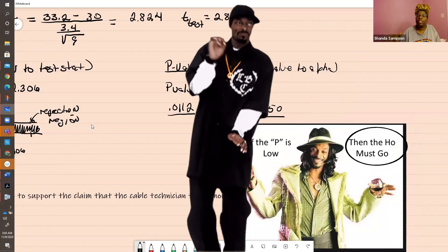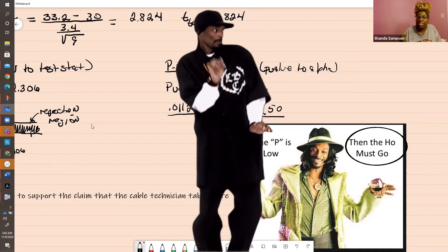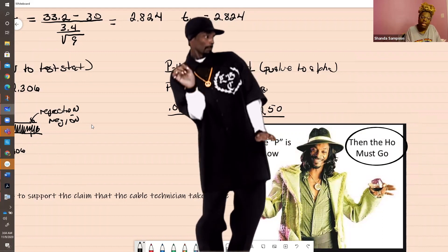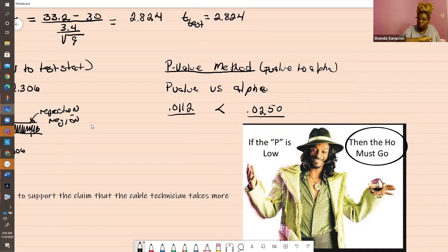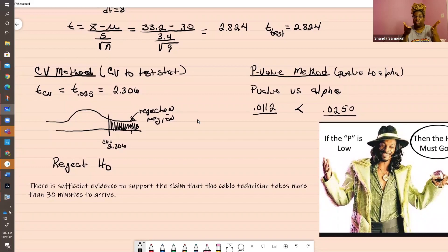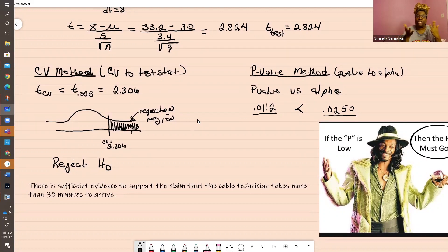The p-value is lower than the alpha. So you must reject that hoe. The two methods do not give you a different answer. They're just two ways of getting to the same answer. You're still going to reject the null hypothesis. There is now sufficient evidence to support your claim that the cable technician takes more than 30 minutes to arrive.